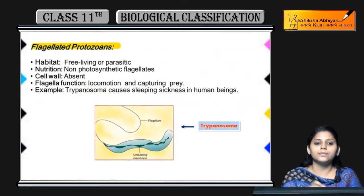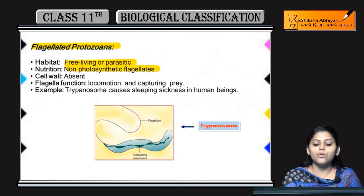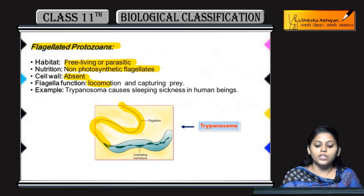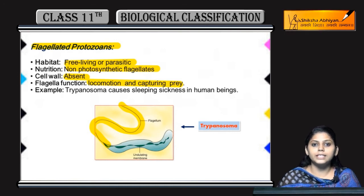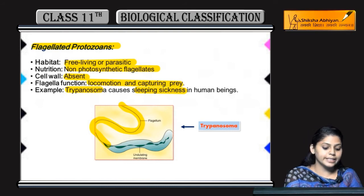Coming to flagellated protozoans — yhe kahaan rehti hai? They are free living or parasitic. Nutrition is non-photosynthetic, aur flagellated hain toh inke paas flagella present hoga. Cell wall inke paas nahi hoti. Flagella ka function: locomotion and capturing prey — jaise amoeboid ka pseudopodia ki through tha, yhe flagella ki through karti hai. Iska main example hai Trypanosoma, jo humans mein sleeping sickness, a disease, cause karta hai.